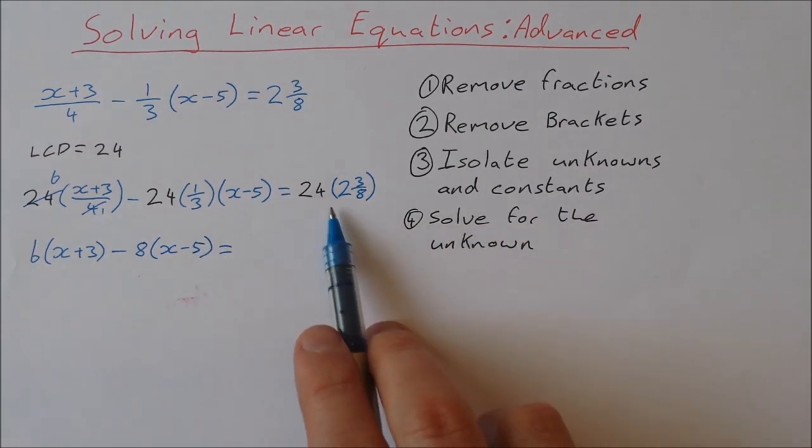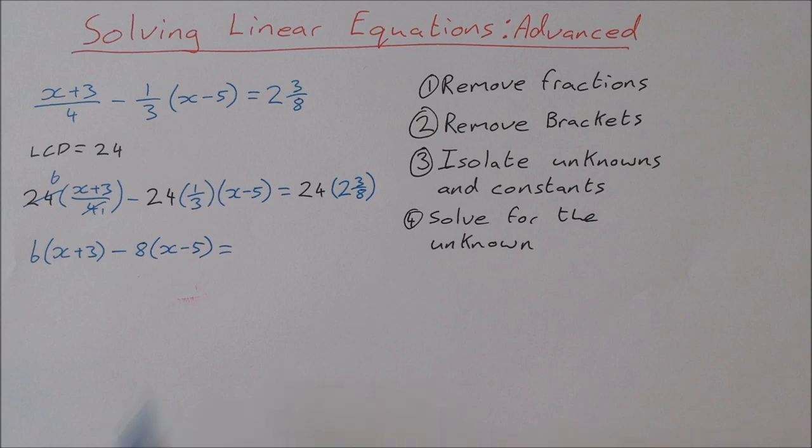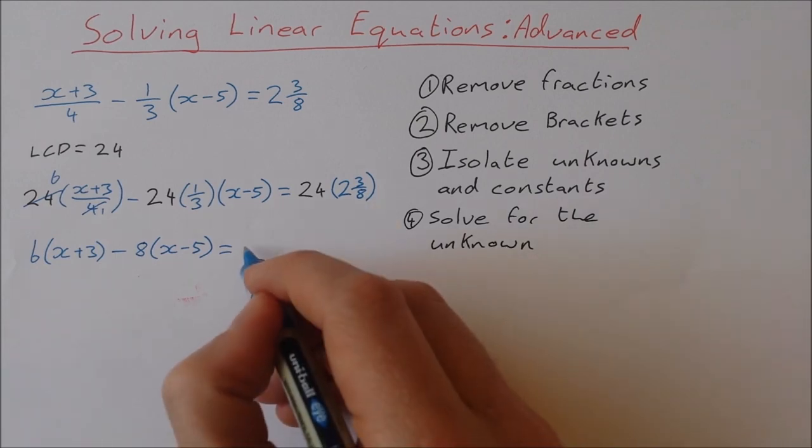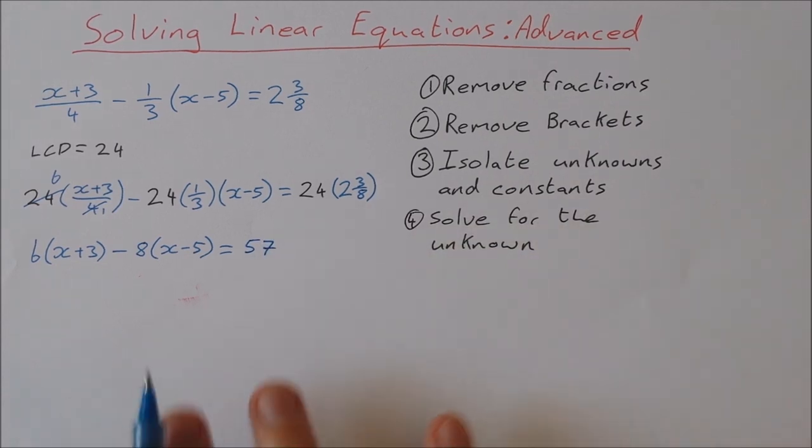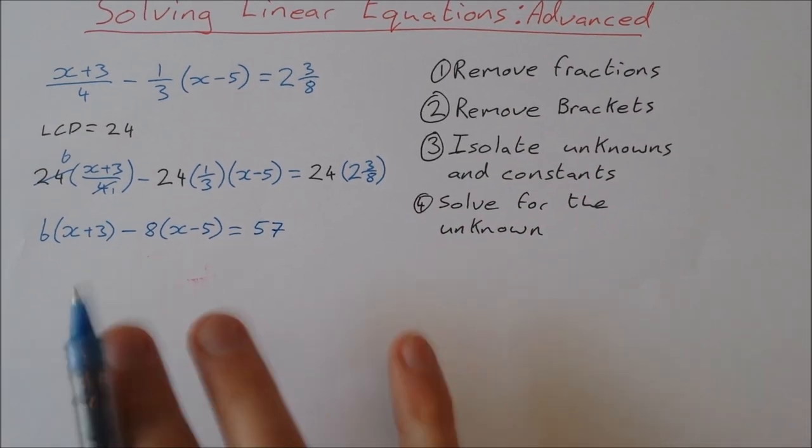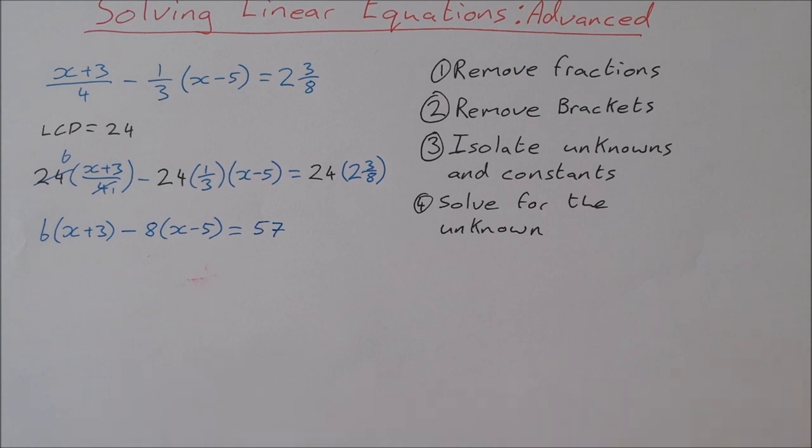And then over here, 24 times 2 3/8. Well, 24 times 2 3/8 actually works out as 57. So now I have a linear equation without any fractions, which looks a lot nicer than what we started off with.